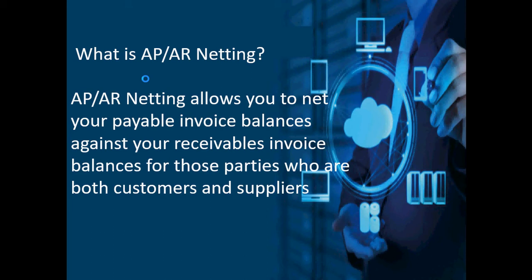In a real business world there could be scenarios where a supplier providing goods and services to you could be the same person to whom you are selling goods and services. For goods and services your supplier sells you, you create AP invoices, and for what you sell to the same person, you create AR invoices. The same party will be created as a customer in AR and supplier in AP module. AP AR Netting helps you arrive at a net balance figure between what you owe the supplier and what the customer owes you.